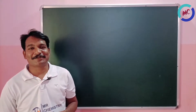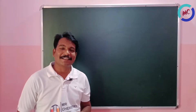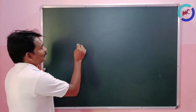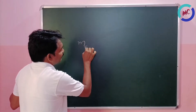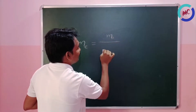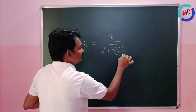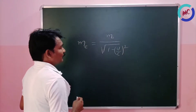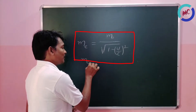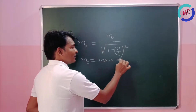To calculate the mass of a moving electron, there is a special formula. See here: m_e is equal to m₀ divided by the square root of (1 minus v²/c²). In this formula, m_e is the mass of the moving electron.